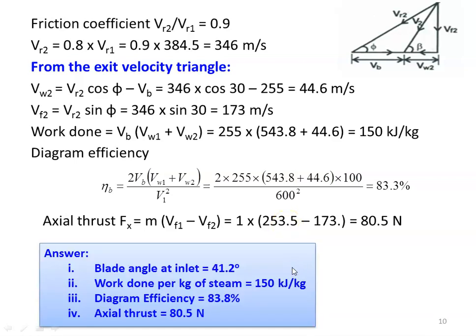Results for Example 4: blade angle at inlet is 41.2 degrees, work done per kg of steam is 150 kJ/kg, diagram efficiency is 83.3 percent, and axial thrust is 80.5 Newton.